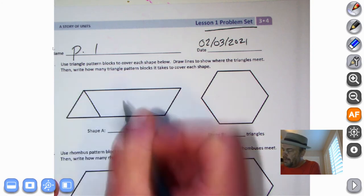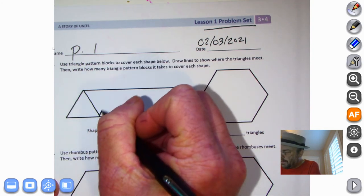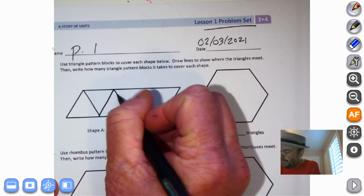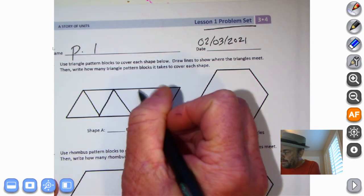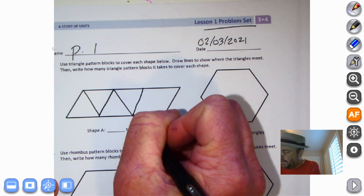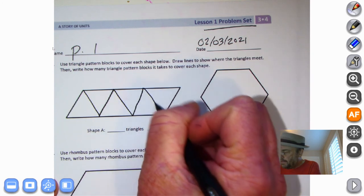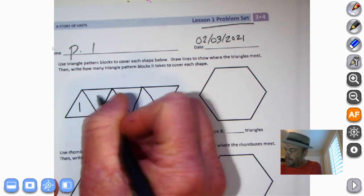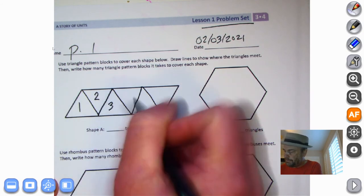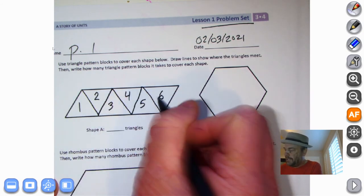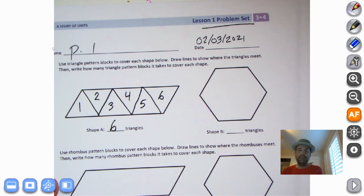One, two, three. Let's continue on. Doink, doink, doink. And doink, doink. So we have one, two, three, four, five, six triangles. There we have it.